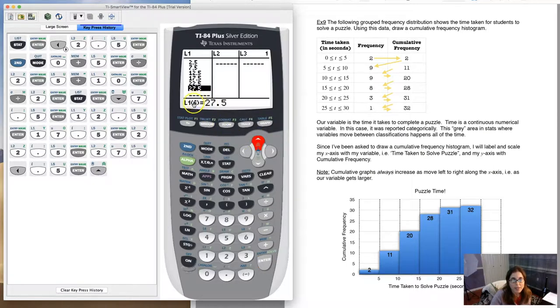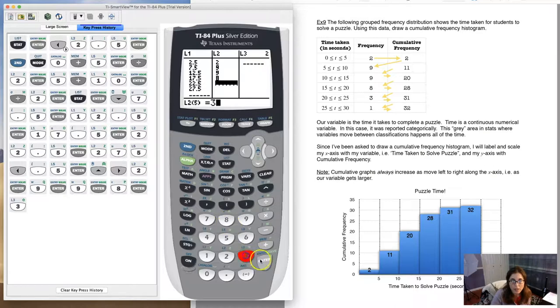And if I look, the last data entry is in the sixth cell. How many categories did I have? One, two, three, four, five, six. So I'm good to go there. Let's put our frequencies in. So we got two, nine, nine, eight, three, and one. Alright. All my data's in.